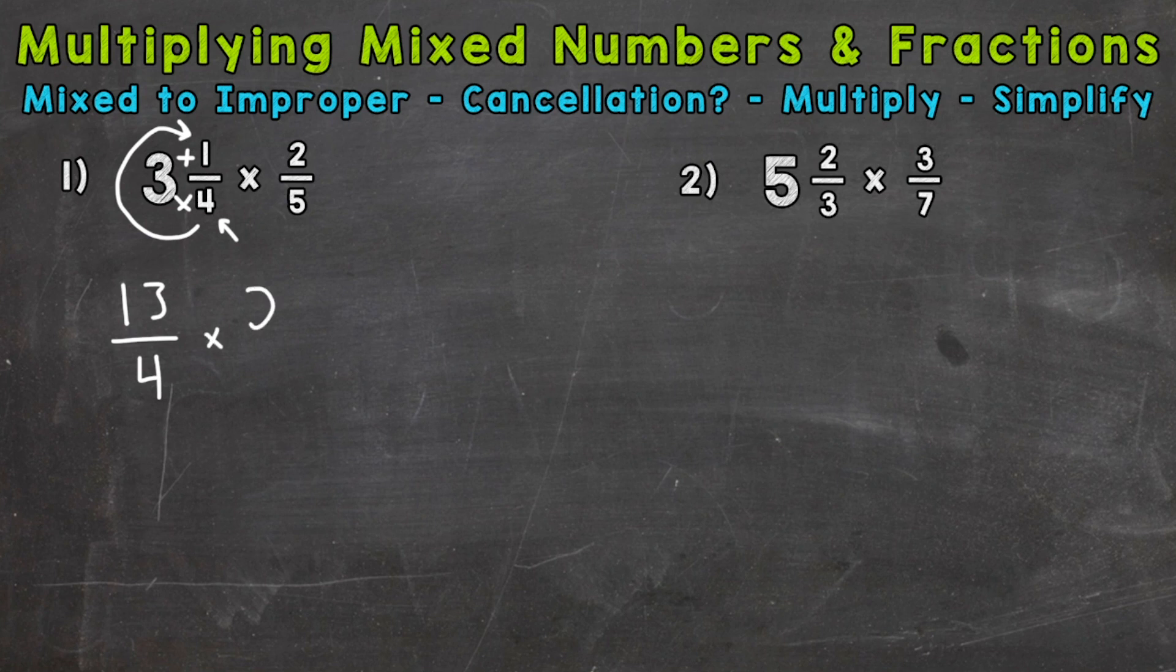Now we can bring two-fifths down. And we have a multiplying fractions problem here. So we can multiply straight across. But before multiplying straight across, you can always check to see if you can use cancellation. You can think of this as simplifying the problem before you multiply. It helps us get easier numbers to work with and also cuts down on any simplifying at the end of the problem.